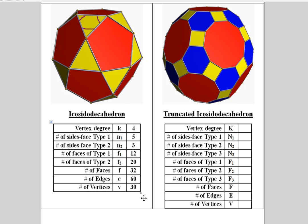On the left-hand side here, we have the data for the original icosododecahedron. We would like to fill in these blanks here for the truncated icosododecahedron. Let's think about the three types of faces that we have here.